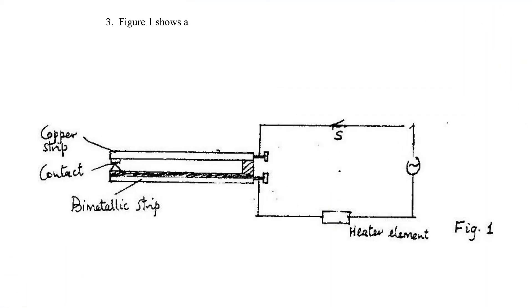Figure 1 shows a circuit diagram for controlling the temperature of a room. Describe how the circuit controls the temperature when the switch is closed.